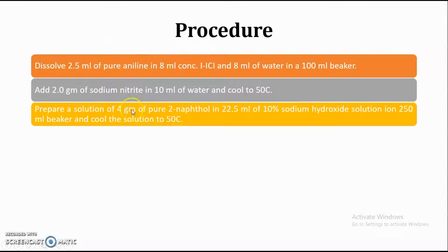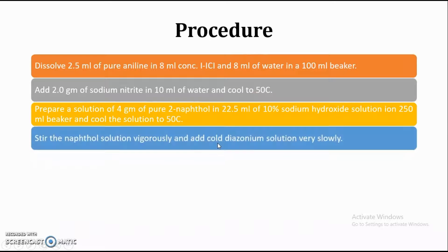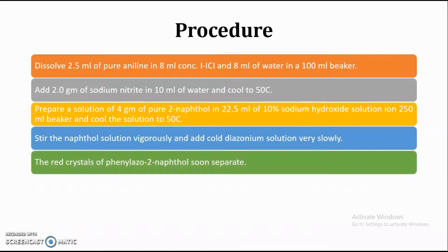We have to prepare the solution of aniline, then the solution of sodium nitrite cooled to 5 degrees Celsius, and add this sodium nitrite solution into the aniline solution. Simultaneously, we prepare the third solution — the 2-naphthol in 10% sodium hydroxide solution. Once the first two solutions are mixed, we reduce the temperature below 5 degrees Celsius. Then, while stirring the naphthol solution vigorously, we add it slowly to the cold diazonium salt solution. After 10 to 15 minutes, red crystals of phenyl azo-2-naphthol are separated.